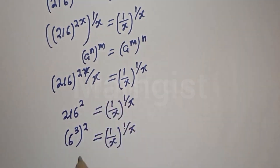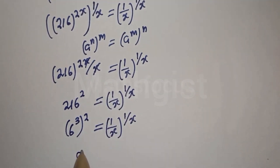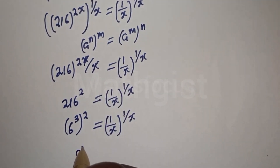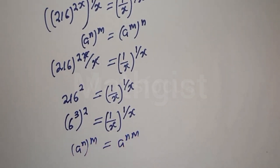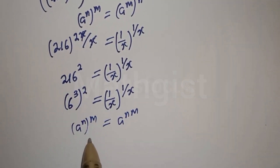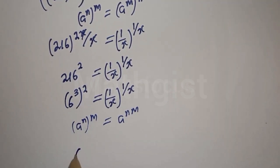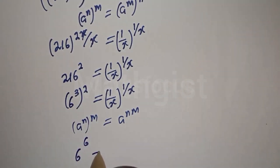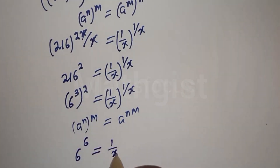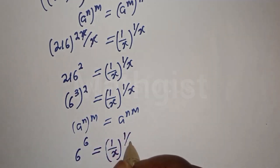Using the rule that a raised to power n, to the power of m, equals a raised to power n times m, this can be written as 6 raised to power 3 times 2, which is 6 to the power of 6, equals one over x to the power of one over x.